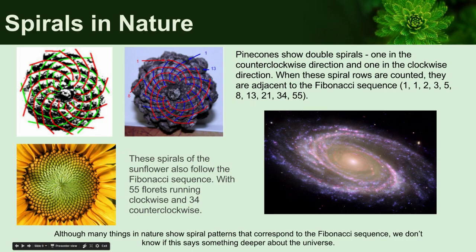The pine cone also exhibits a double spiral, as indicated by the separately colored lines. It's very interesting because if you actually count up the rows in pine cones, you'll notice that they're adjacent to the Fibonacci sequence — which is generated by adding the two previous numbers to get the next number. If you count up the rows of a pine cone, they will be adjacent to the Fibonacci sequence. So there is some connection between a very famous mathematical sequence and what we see in nature.